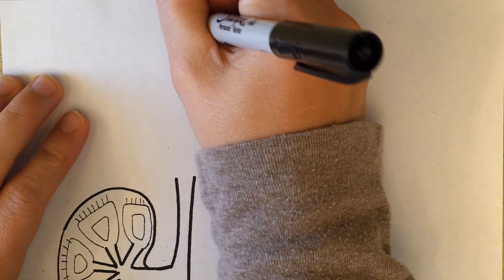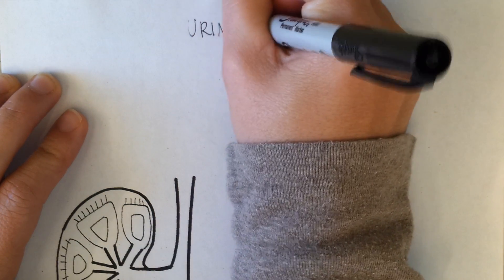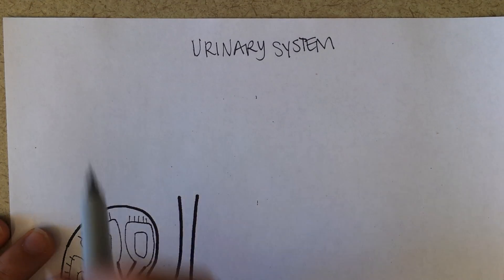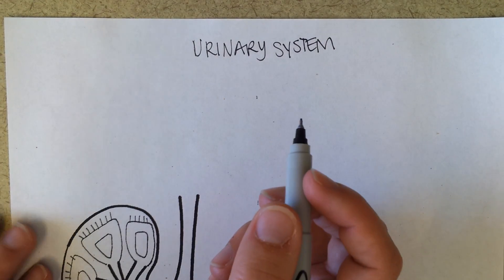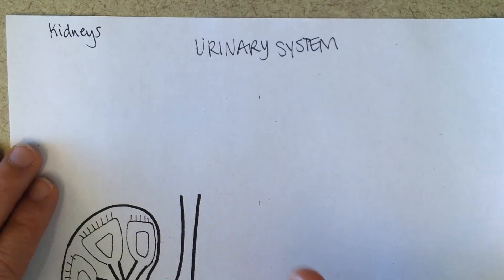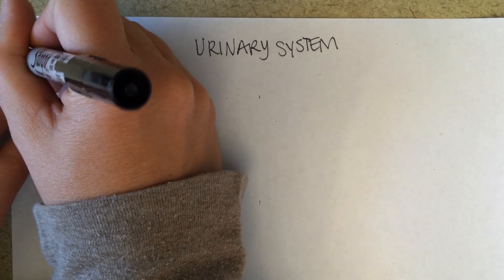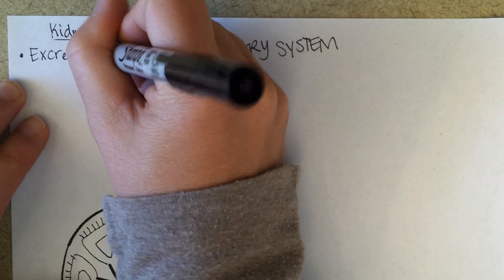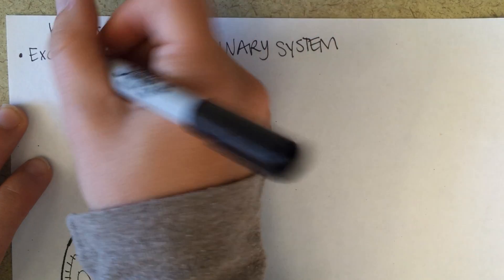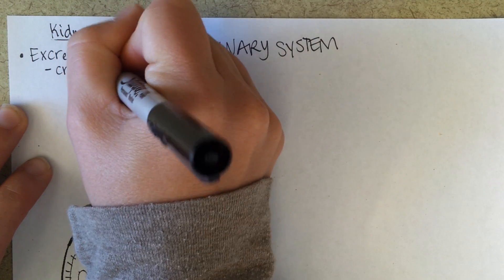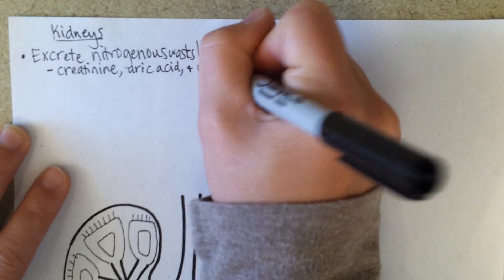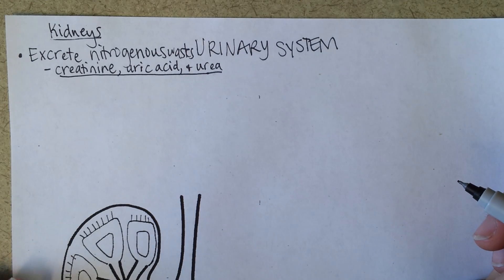This is the beginning of the urinary system. First, let's list a few of the functions of the urinary system. The kidneys are the main organ, and they excrete nitrogenous wastes, and those include creatinine, uric acid, and urea. These are all nitrogen-containing compounds that are byproducts of metabolism.